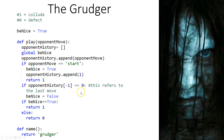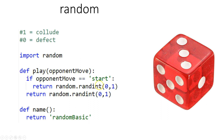The Grudger uses opponent history. It has a boolean that is true by default, so it always colludes until the opponent defects against it. Once betrayed, it sets the flag to false and always defects from that point on. Next is the Random strategy — a simple 50-50 roll no matter what happens.